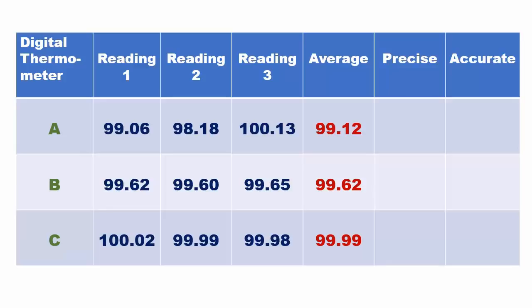Now let us do some analysis of the data. The three values of thermometer A are not close to each other; hence the thermometer is not precise. The average value is not close to 100; hence it is also not accurate. The three values of thermometer B are close to each other; hence the thermometer is precise.